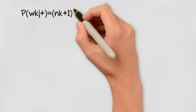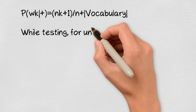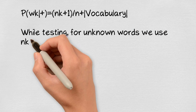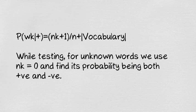While testing, if we get an unknown word, we use Nk equals 0 and find its probability being both positive and negative. This is how we calculate probabilities using Naive Bayes.